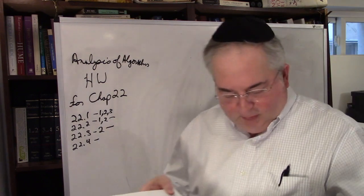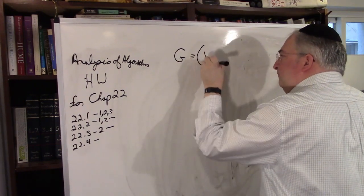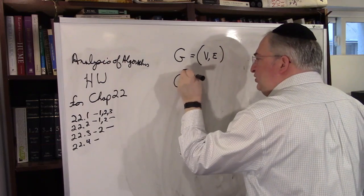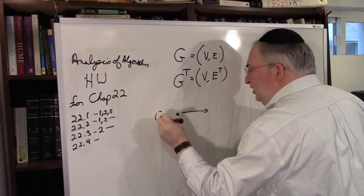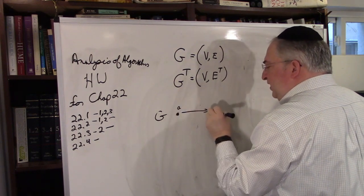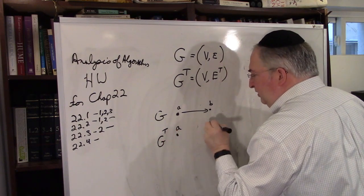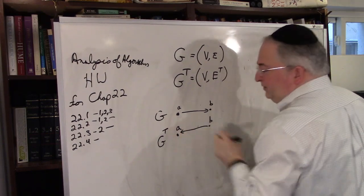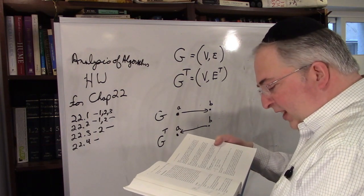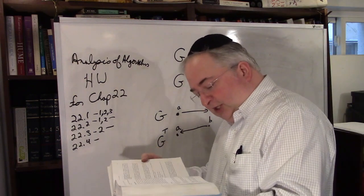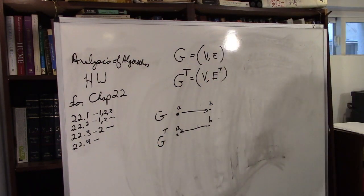Number 3: the transpose of a directed graph is the graph GT. So we have graph G equal to vertices and edges, then we make graph GT with the same vertices, but the edges are flipped. In G you have an edge from vertex A to vertex B; in GT that becomes an edge from B to A. GT is G with all edges reversed. Describe an efficient algorithm for computing GT from G for both adjacency list and adjacency matrix representations and analyze the running times.